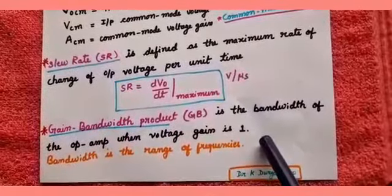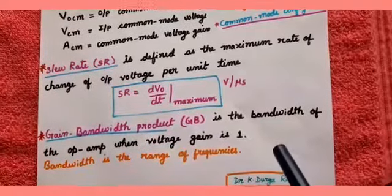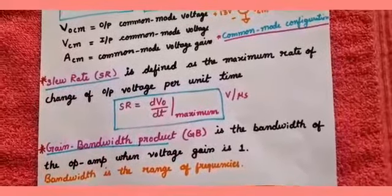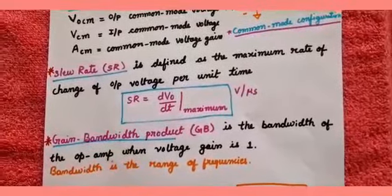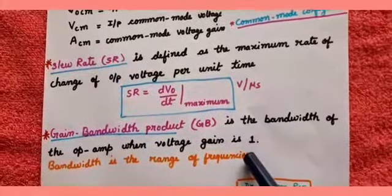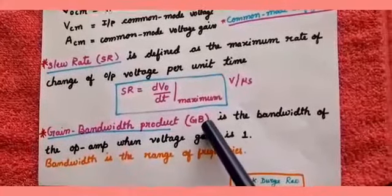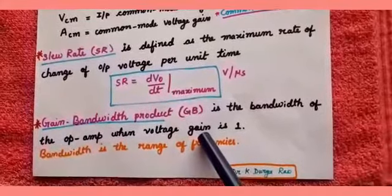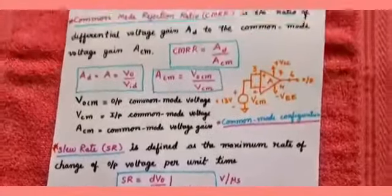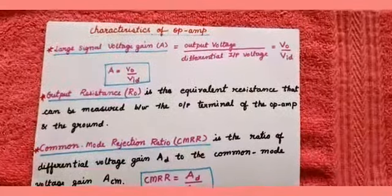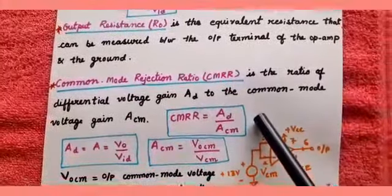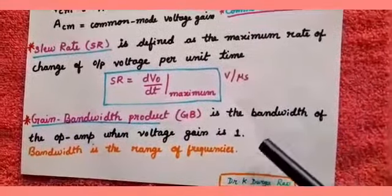The next characteristic is gain bandwidth product. Bandwidth is the range of frequencies that can be passed through the device. The gain bandwidth product, GV, is the bandwidth of the op-amp when the voltage gain is 1. In this slide we have seen: large signal voltage gain A, output resistance Ro, CMRR, slew rate, and gain bandwidth product.